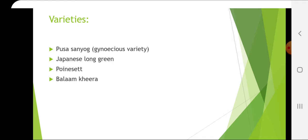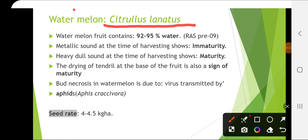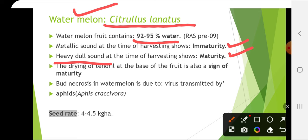The next crop is Citrullus lanatus, that is watermelon. Watermelon fruit contains 92 to 95% water. Metallic sound at the time of harvesting shows immaturity, and a heavy dull sound shows maturity. Drying of the tendril at the base of the fruit and the presence of a yellow spot at the base are also signs of maturity.